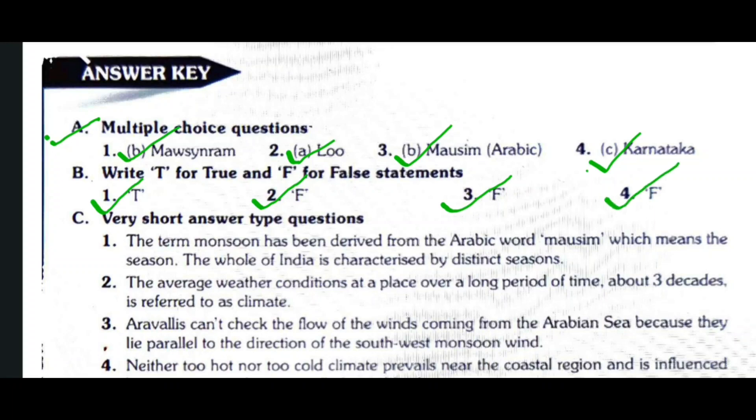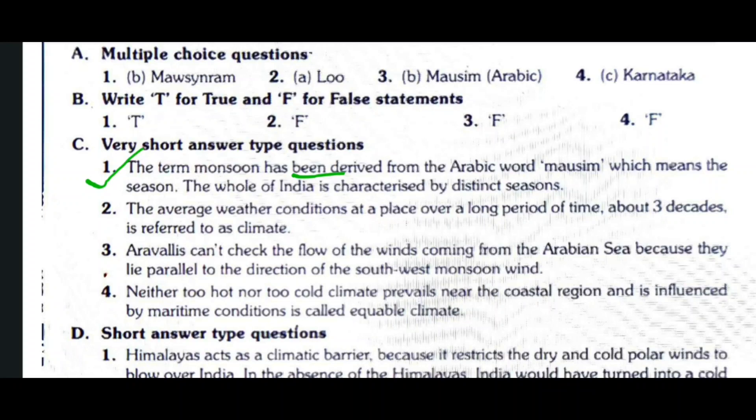Next is very short answer type questions. First question: What is meant by the term monsoon? The term monsoon has been derived from the Arabic word 'maushim', which means the season. The whole of India is characterized by distinct seasons.